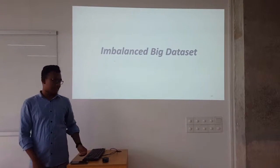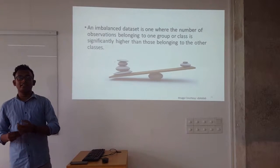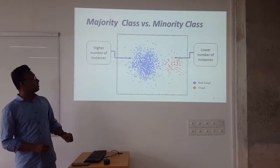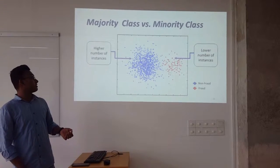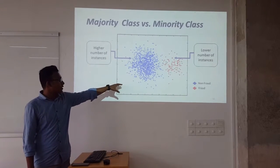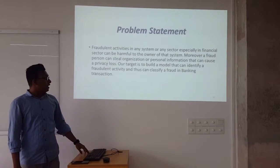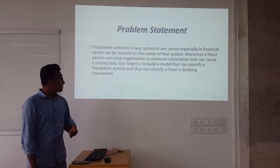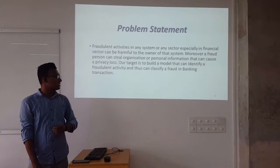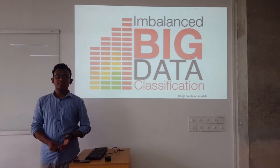Let's discuss about the email big data. Email big data has a large number of instances compared to others. In email data, there is also a majority class and a minority class — meaning the higher number of instances is very high and one is very low. Our problem statement is that we want to build a model that can identify fraudulent activity and classify fraud in banking transactions. The main problem is the imbalance of the big dataset.